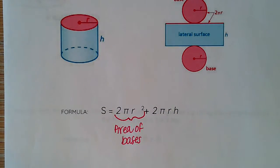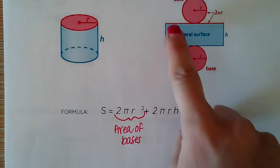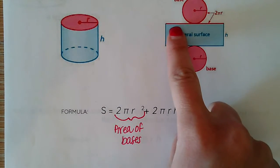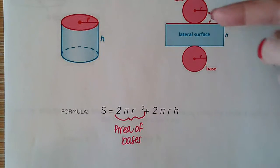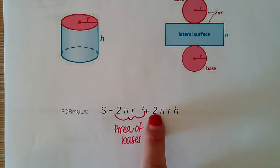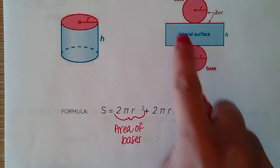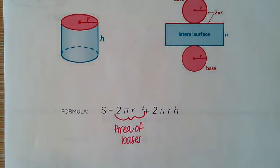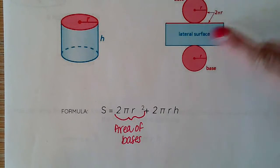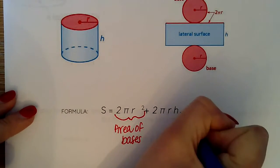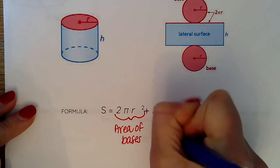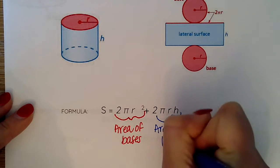Then we know that the lateral surface, the length of your lateral surface, is actually the same as your circumference, which gets you that 2πr. So that would be the length of one side of your lateral surface, and then we multiply that 2πr, that circumference, times your height of your figure, which is h. So this second part is the area of your lateral surface.